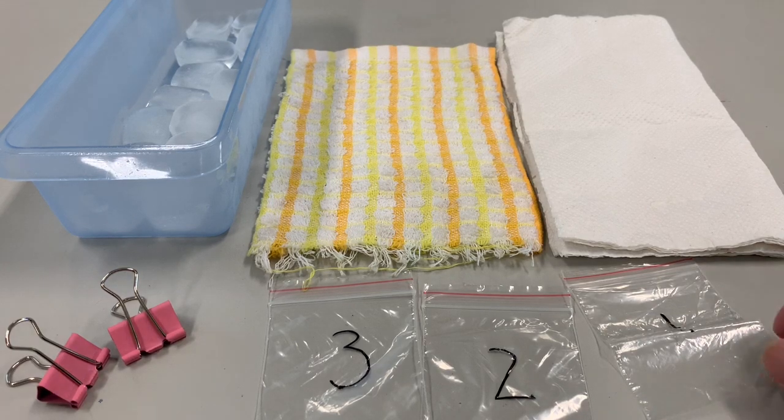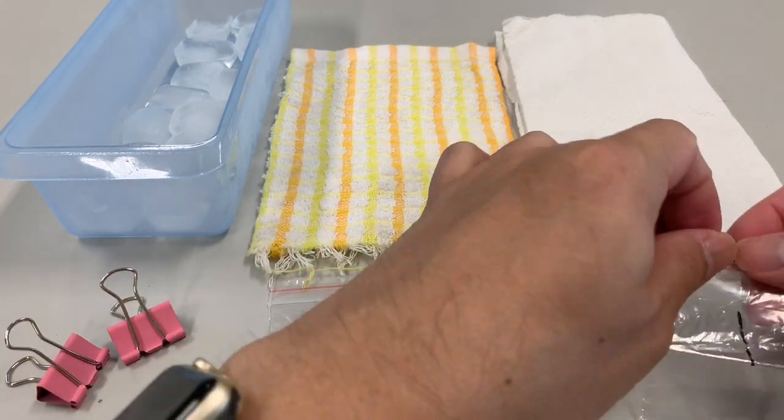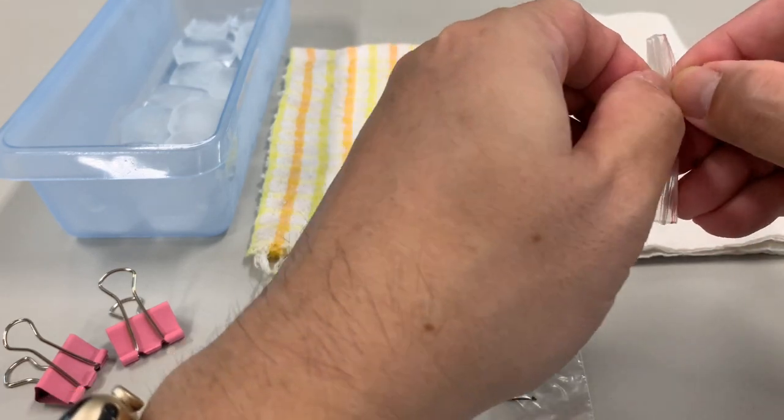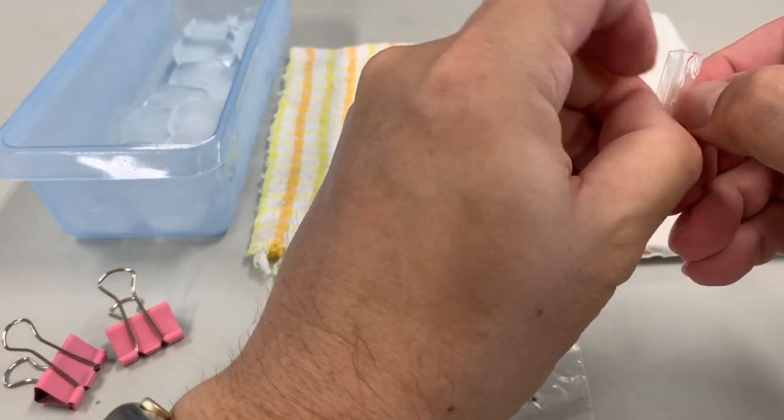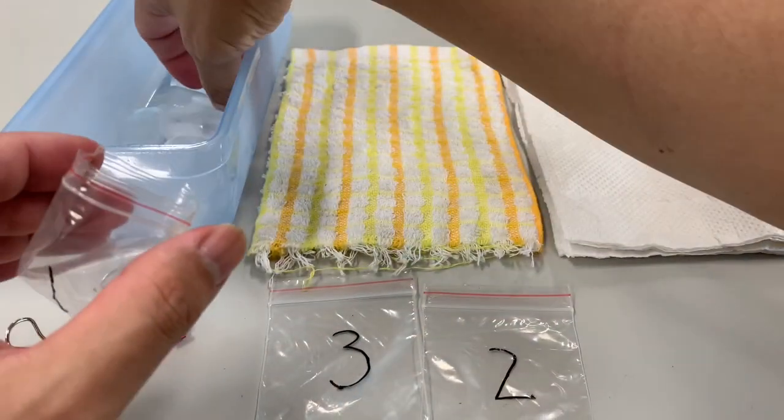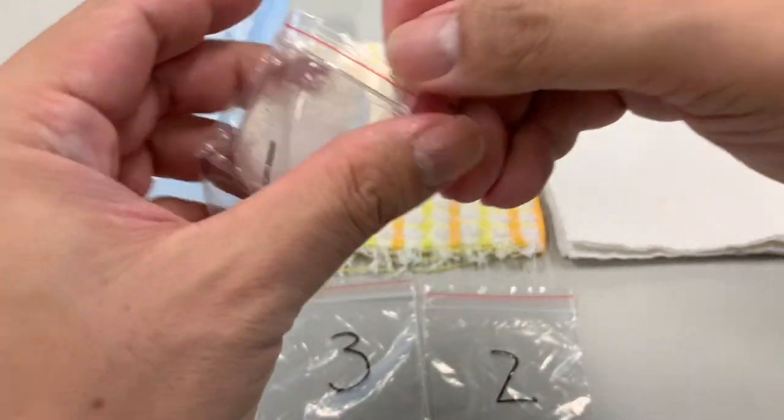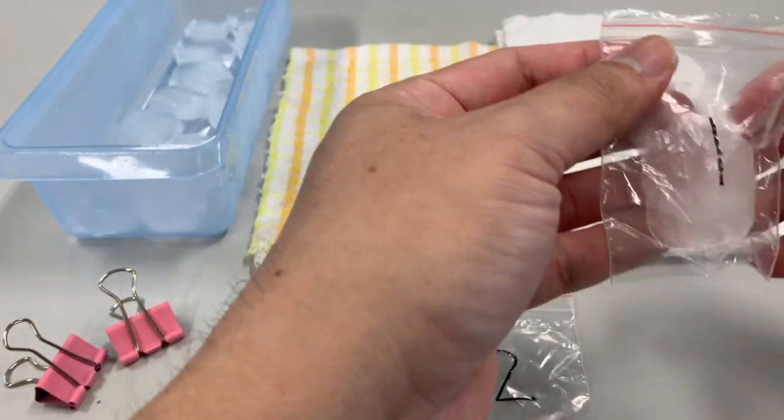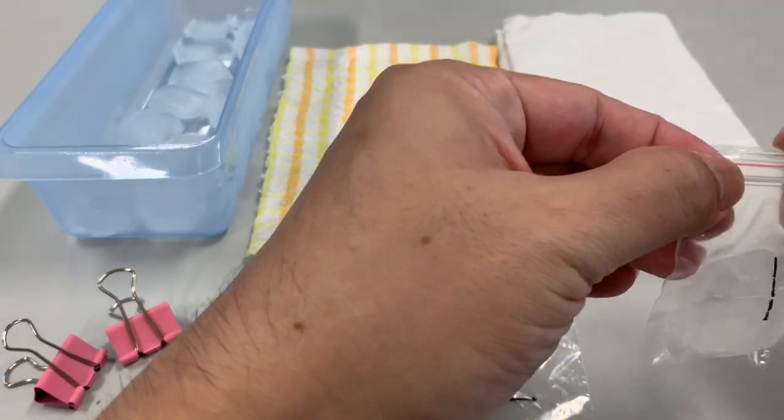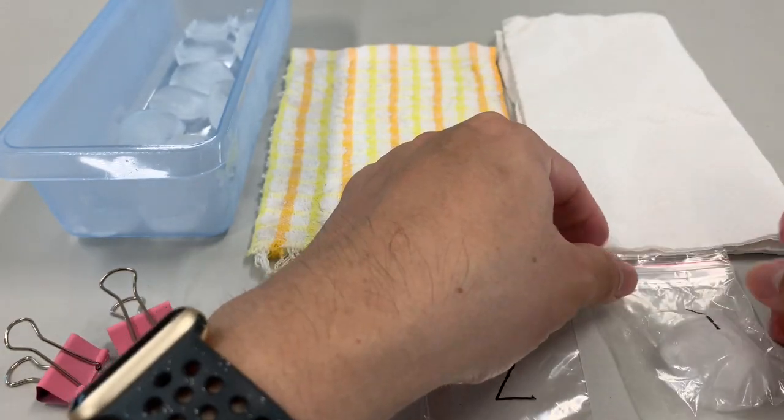So we're gonna put three ice cubes, one each, into the plastic bags and seal it up to prevent any water from leaking.